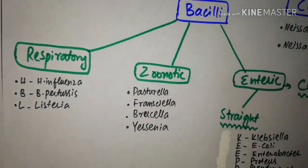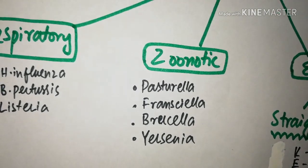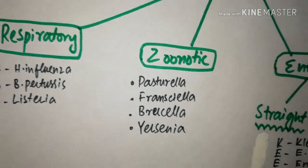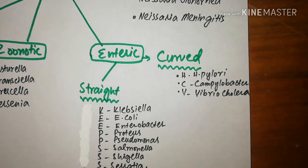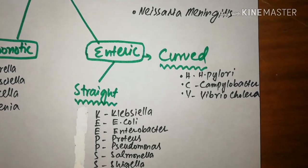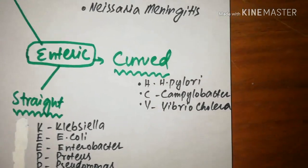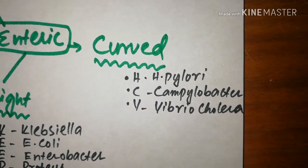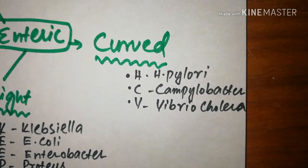The second type, the zoonotic group, includes Pasteurella, Francisella, Brucella, and Yersinia. The enteric group can be divided into COD and STRAT types. The COD includes H. pylori, Campylobacter, and Vibrio cholerae.